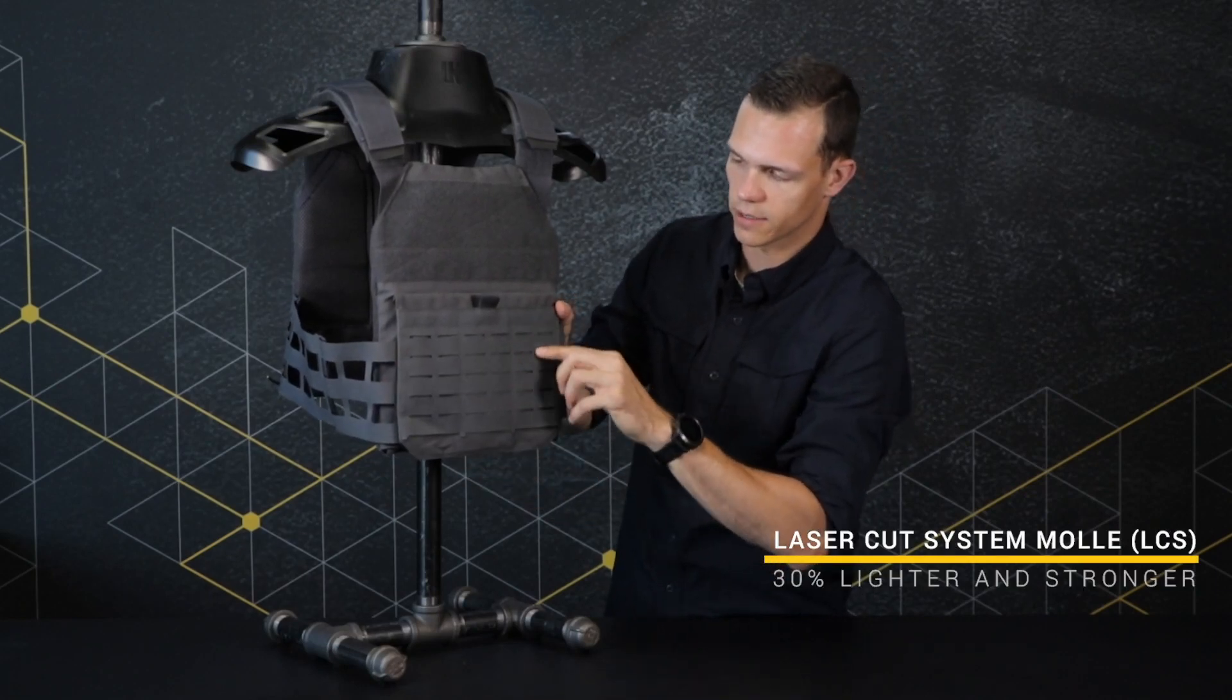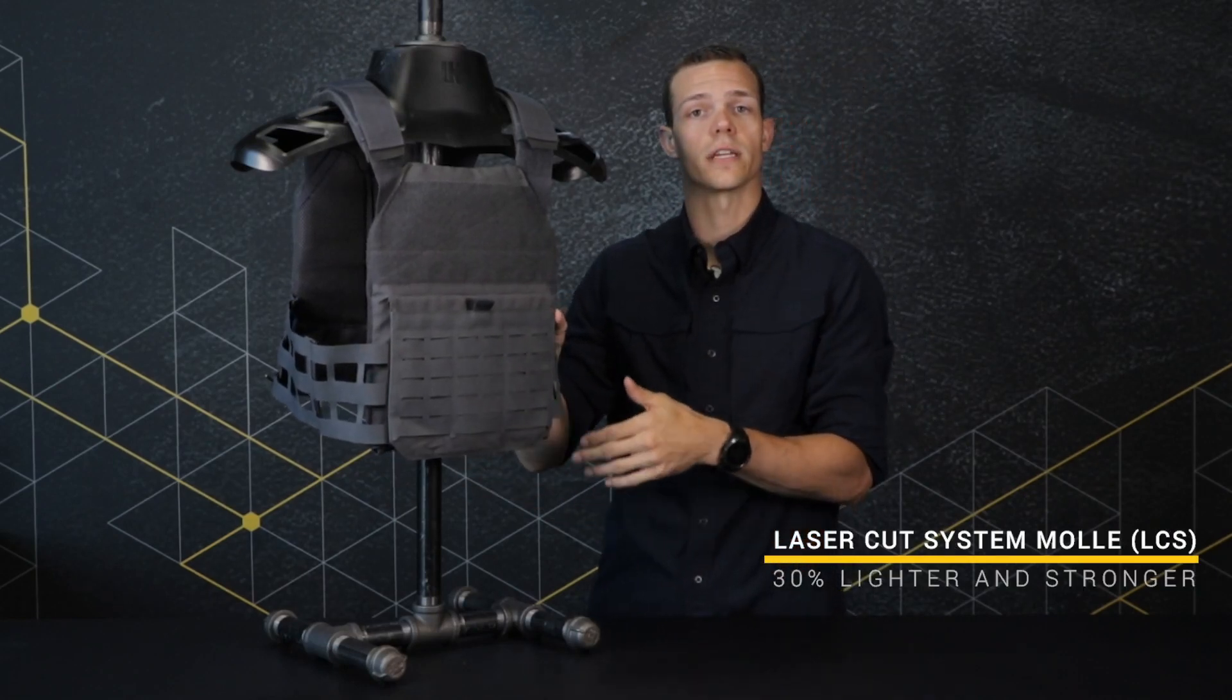There is the LCS laser cut here in the front for any additional pouches that you want to run in the front of your plate carrier.